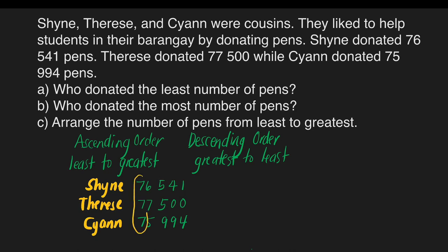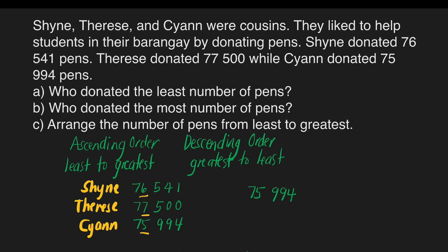These are 7. It means we will move to the next digit starting from the left. In this case, we have 6, 7, and then 5. Which of these three numbers has the least value? That is 5. So we'll write Cyann's number 75,994. We may omit Cyann from the list.